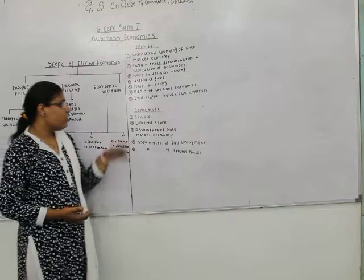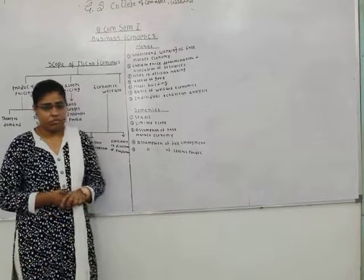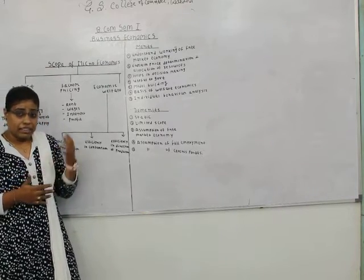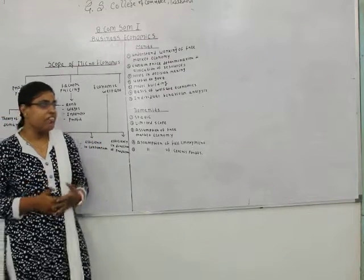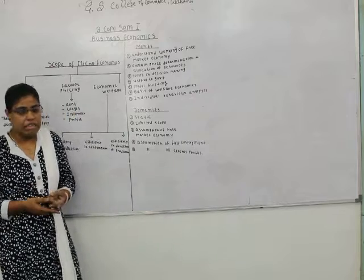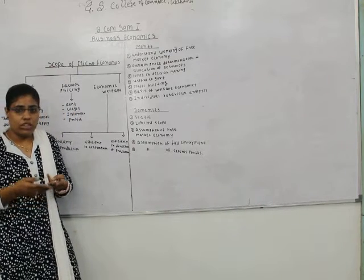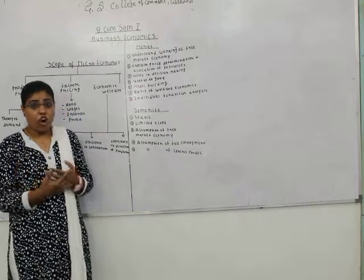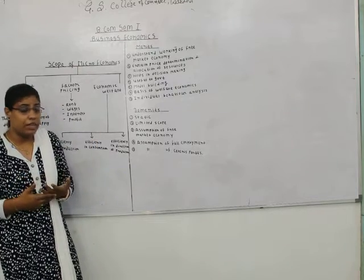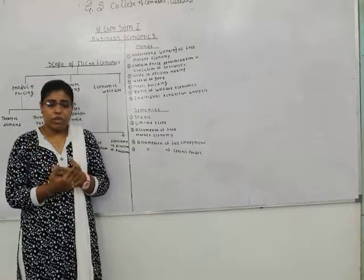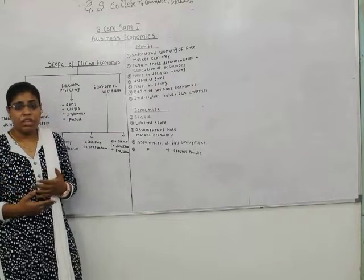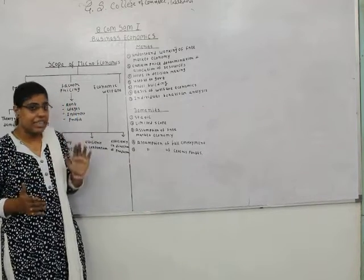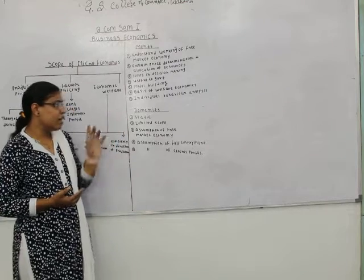Now we look at the demerits of microeconomics. The first demerit is that it is static. Microeconomics is based on many assumptions, and theories are applicable only when these assumptions are fulfilled — such as the assumption of ceteris paribus, full employment, and free market economy. If these assumptions don't exist, the theory is not applicable. Therefore it is static and not suitable to meet the needs of a dynamic economy where things keep changing continuously.